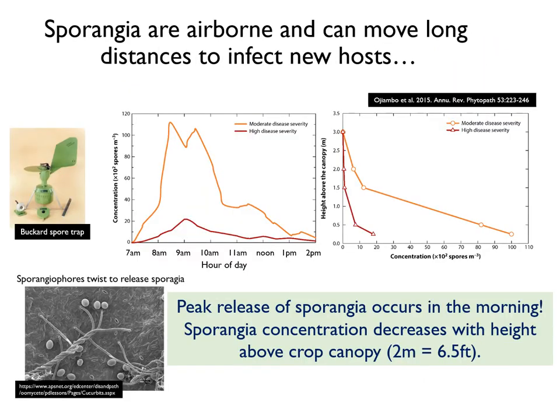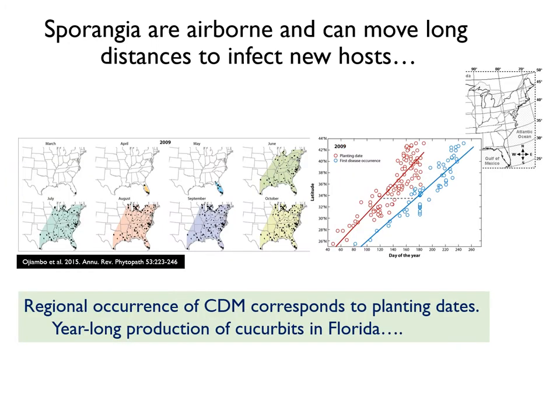We know that sporangia are released in the morning, shortly after sunrise. This coincides with the warming of the air that lowers relative humidity and causes the sporangiophores to twist to release the sporangia into the air. The occurrence and spread of downy mildew corresponds with the planting of cucurbits along the east coast. Further north, the fungus is unable to overwinter in the absence of a living host.